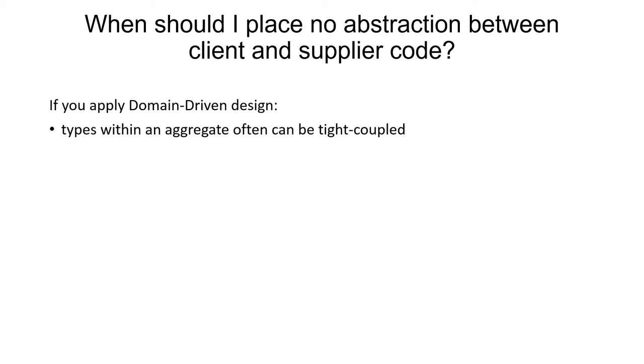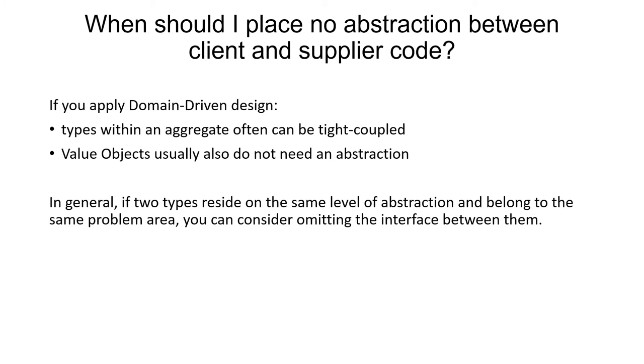However, within an aggregate I often couple my classes tightly because they reside on the same level of abstraction and belong to the same problem area. Also, I usually do not create an interface for value objects. These are immutable objects that normally have no important functionality associated with them but simply represent a single value, for example a color or a currency. In general, I would say if two classes solve a problem in the same domain and if they reside on the same level of abstraction, you can consider leaving out the abstraction between them. But if in doubt, I would advise you to rather go for the abstraction between client and supplier, just because it is a little more flexible in the future.